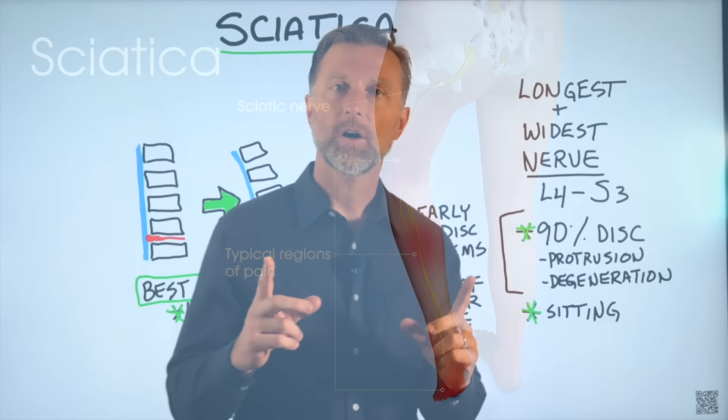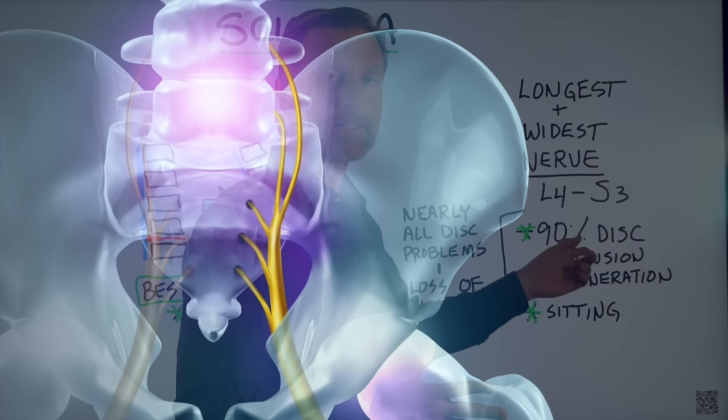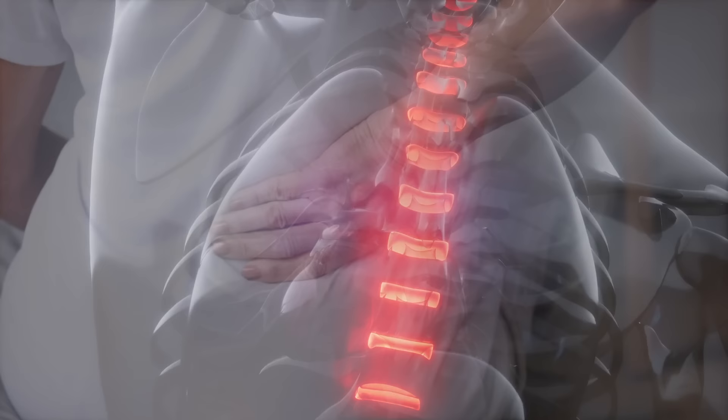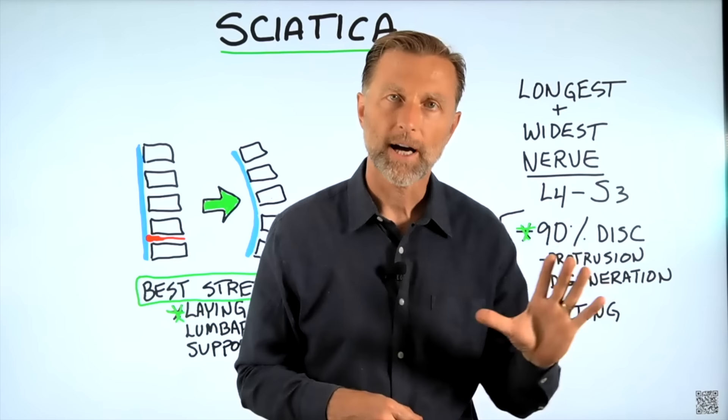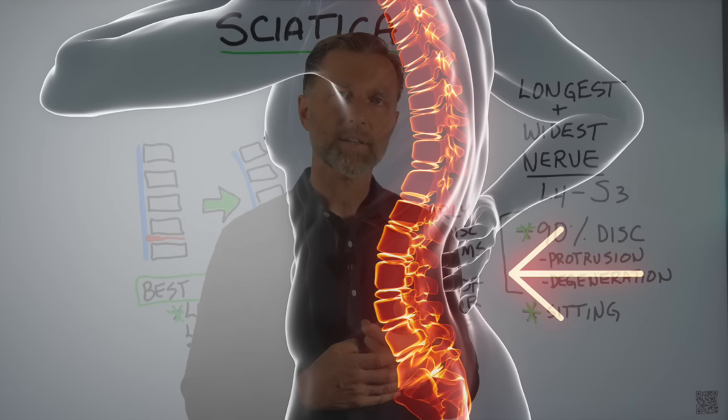What you need to know is that 90% — the great majority — of sciatic nerve pain involves a disc. It can also involve degeneration of the disc where the vertebrae start to become collapsed and you get thinner discs. This is why as people get older, they might have more sciatic-type pain. The interesting thing about disc problems is that when you look on an x-ray or an MRI and you see a problem with the disc, it nearly always comes with a loss of the lumbar curve.